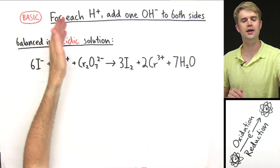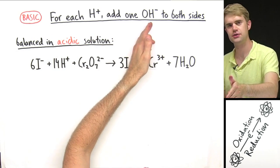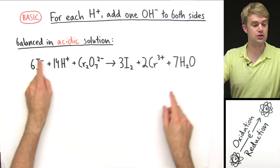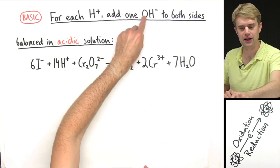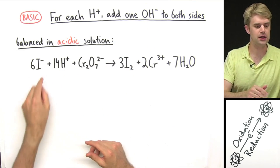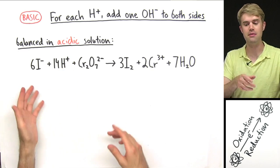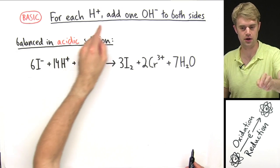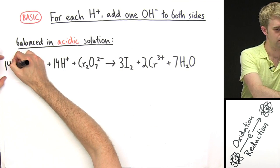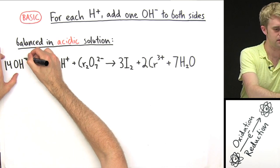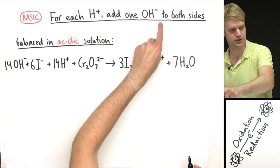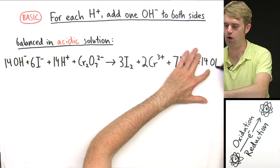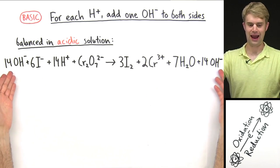Here's the first step: for each H⁺, add one OH⁻ to both sides. It's these H⁺ ions that are making this equation acidic, so adding OH⁻ is the first step to getting rid of the H⁺ and making the solution basic. We have 14 H⁺ here, so I'll add 14 OH⁻ to this side, and then also add 14 OH⁻ to the other side.